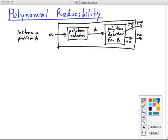Now this lets us define the class of problems NP-hard. These are the problems that are at least as hard as any other problem in NP, because any problem in NP reduces to an NP-hard problem in polynomial time.